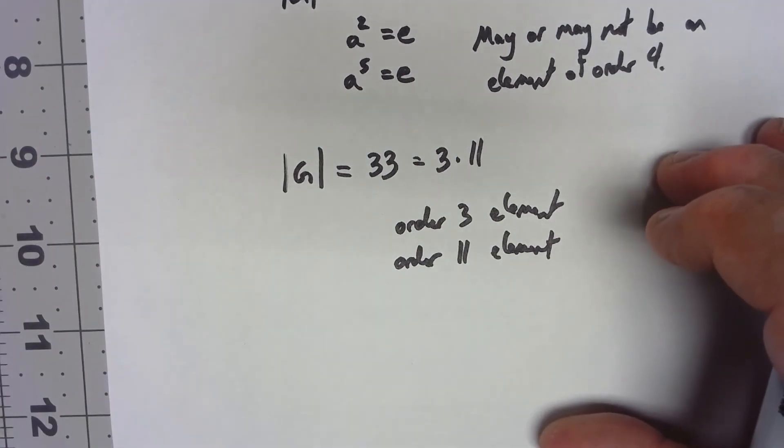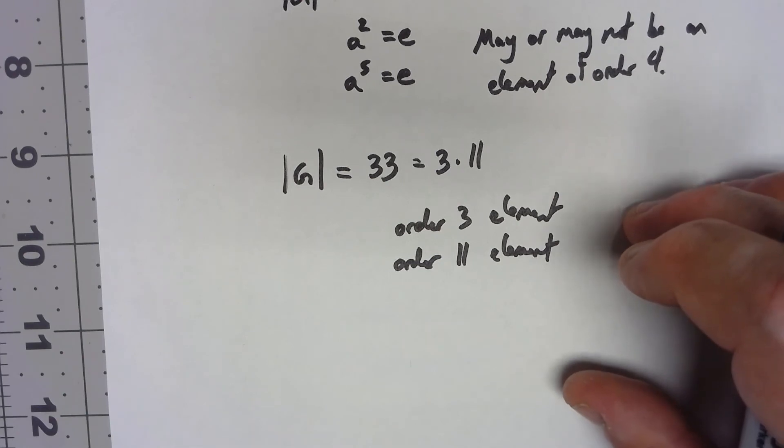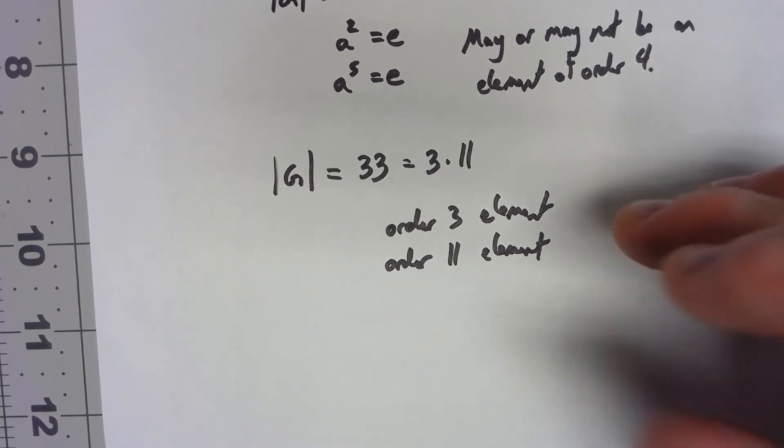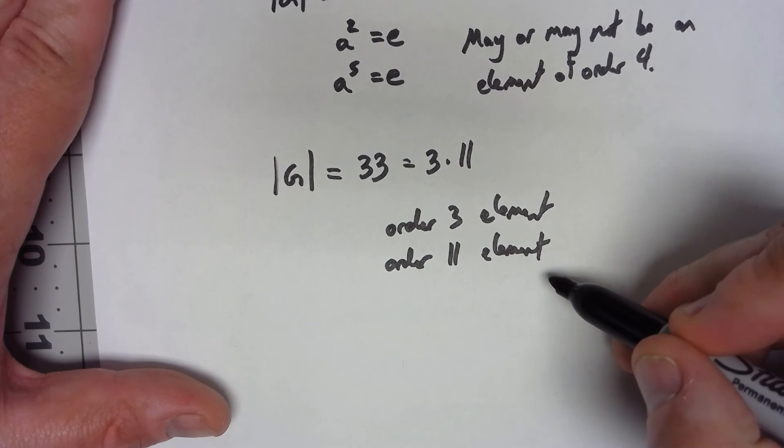That's part of the homework. But as it is, we only know from this theorem the 3 and the 11.